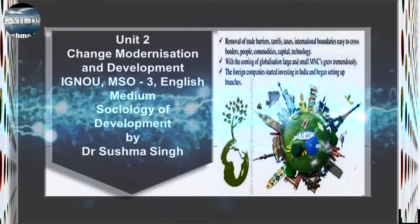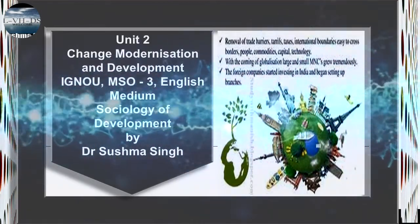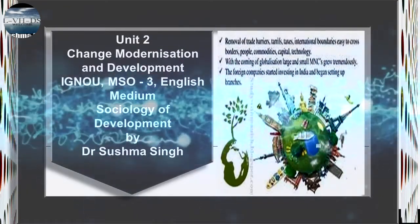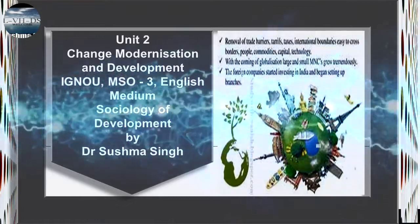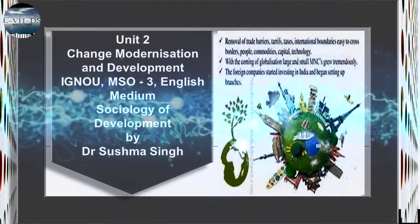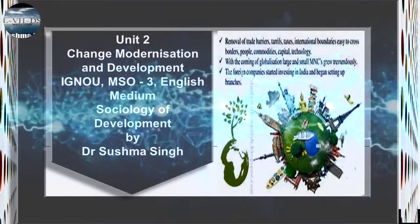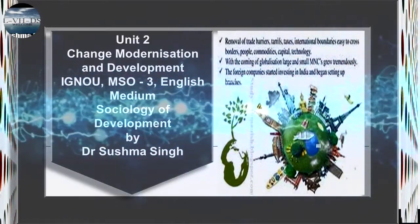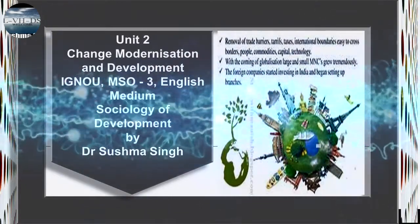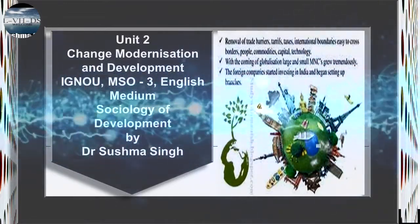Dictatorship can ensure obedience to authority but does not spur entrepreneurship and innovation. The end of feudalism in Western Europe was an important contributor to the onset of the mercantile era and founding of the great European commercial empires. The further transition from monarchies to democracy stabilized the internal order and provided the social foundations for the industrial revolution.